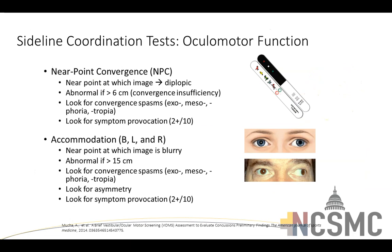Near point convergence involves having the athlete look at a single point and slowly bringing it from far field toward their nose, asking when the image goes double. Normal is less than six centimeters — meaning the image doesn't go double until within six centimeters of the nose. If it doubles at greater than six centimeters, that's convergence insufficiency — a positive finding. Also watch for any exophoric or exotropic drift of the eyes.